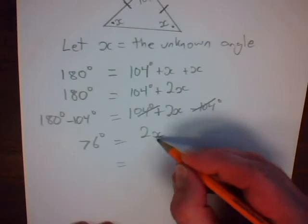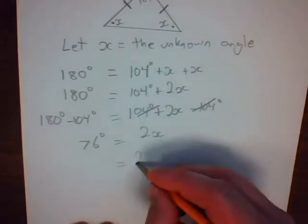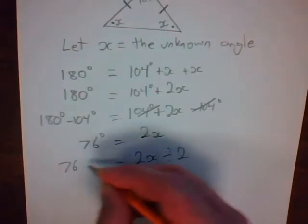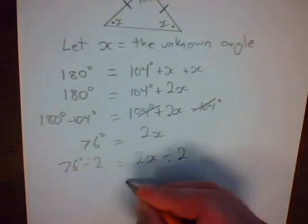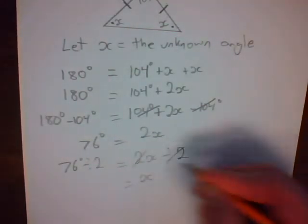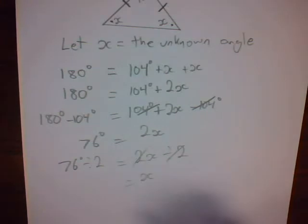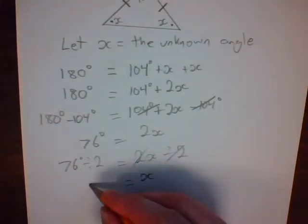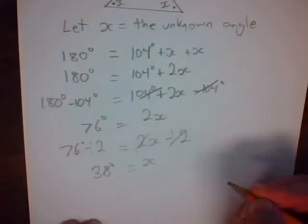Again, you need to get x by itself. I have to get rid of this. I'm going to do the opposite. Whatever you do to one side, you must do to the other. If those cancel, 76 divided by 2, give me 38 degrees.